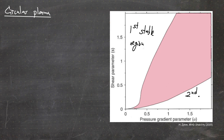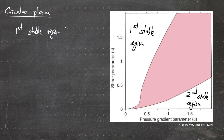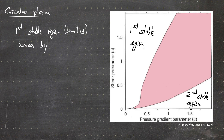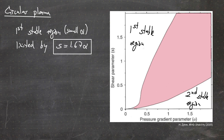Below the instability region there is a second stable region. The first stable region is characterized by small α, meaning small pressure gradient — so it's not surprising that this region is stable because the destabilizing forces are small. The first stable region is limited by a linear function: s = 1.67α.